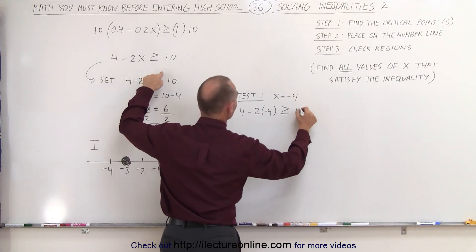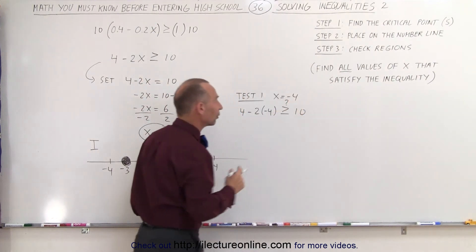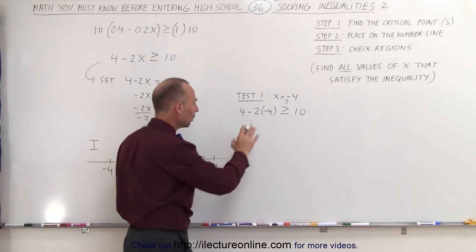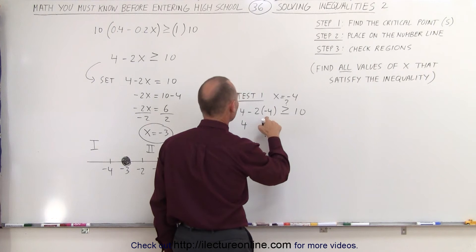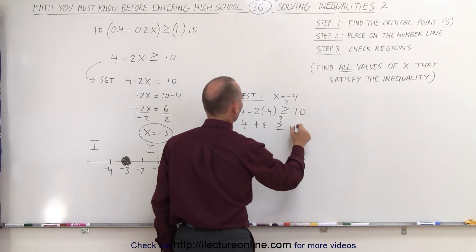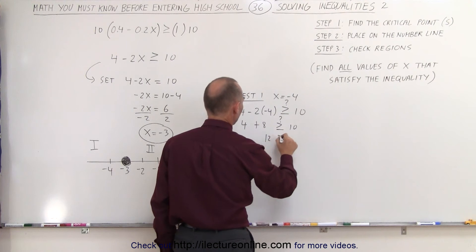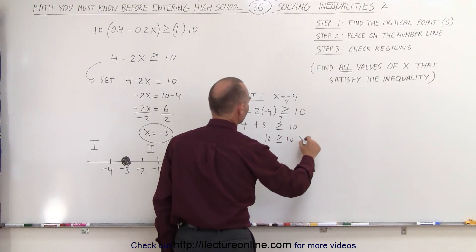We plug that in here, so we get 4 minus 2 times the negative 4 greater than or equal to the number 10, and that's a question mark. We don't know. We're going to find out. Plug this in. We get the following: 4 minus 2 times a minus 4 is a plus 8. Is that greater than or equal to 10? Well, 12 greater than or equal to 10, and the answer is yes, it is.